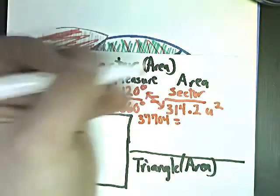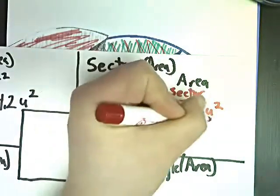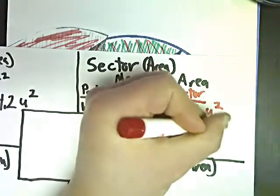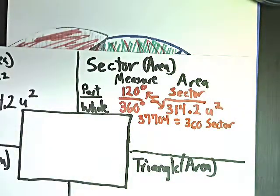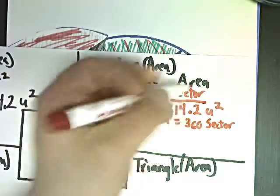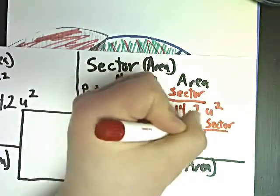I'm going to set that equal to 360 times sector, because sector acts as a variable here. Even the name can be the variable, you can use pictures or whatever. In order to get sector by itself, I'm going to divide by 360.